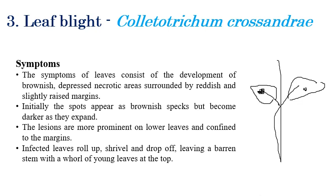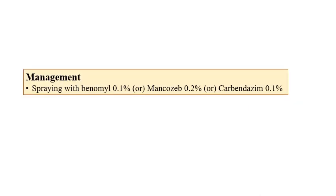In later stages, the brown spots become darker and extend to other parts as well — not only on leaves but also on stem portions. Shriveling, drooping, curling, and rolling of leaves can be observed. In later stages, not only the leaves but also the stem gets infected by this leaf blight pathogen, Colletotrichum crossandrae. Spraying of benomyl at 0.1%, mancozeb at 0.2%, or carbendazim at 0.1% — any one of these — can manage this disease.